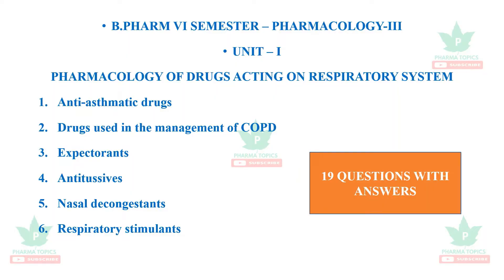Welcome to our Pharma Topics channel. Welcome to the B.Pharm sixth semester pharmacology unit 1, which deals with the pharmacology of drugs acting on the respiratory system. It has six subdivisions: anti-asthmatic drugs, drugs used in management of chronic obstructive pulmonary disease, expectorants, antitussives, nasal decongestants, and respiratory stimulants. In this section we are going to see 19 questions useful for your examination preparation.